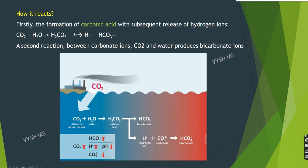Ocean acidification summarizes several processes and reactions when carbon dioxide reacts with seawater. Two reactions are important. First, carbon dioxide and water react to form carbonic acid (H2CO3), which then splits into hydrogen ions and bicarbonate ions — increasing acidity and reducing pH. Second, carbonate ions react with the hydrogen ions from the first reaction to form bicarbonate ions. The combined effect of these two reactions increases acidity and lowers the availability of carbonate ions.